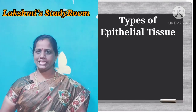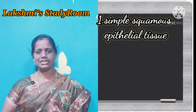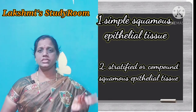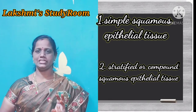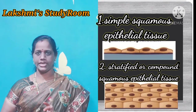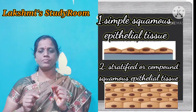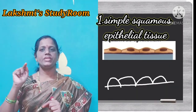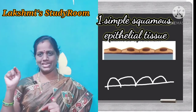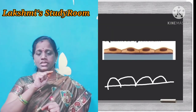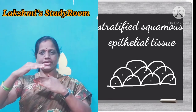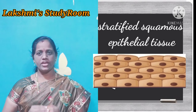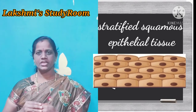First, squamous epithelial tissue. It is of two types: simple squamous epithelial tissue and stratified squamous epithelial tissue. The difference between them is — if the cells are arranged in one layer, that is called simple squamous epithelial tissue. If the cells are arranged in many layers, one layer upon another, it will be called stratified squamous epithelial tissue.